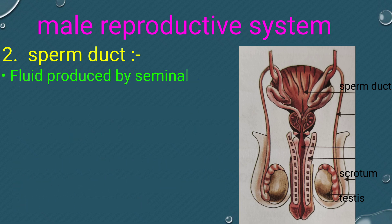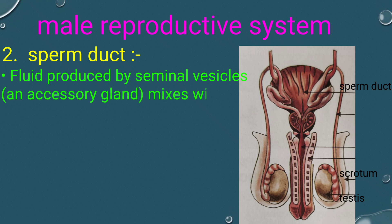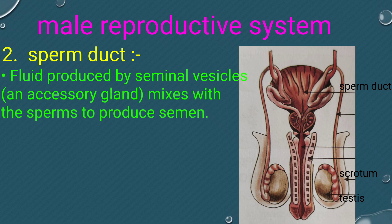Fluid produced by the seminal vesicles mixes with the sperm to produce semen. This fluid provides nourishment to the sperm.